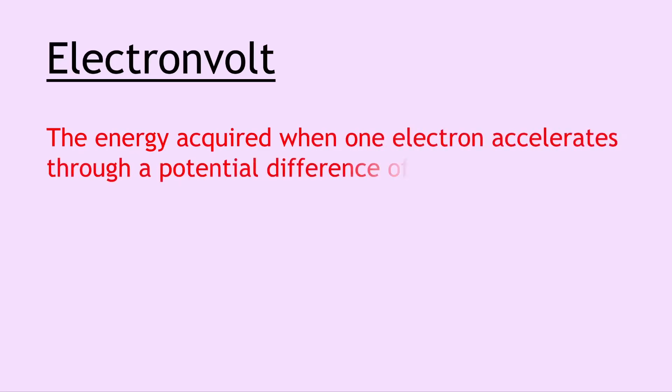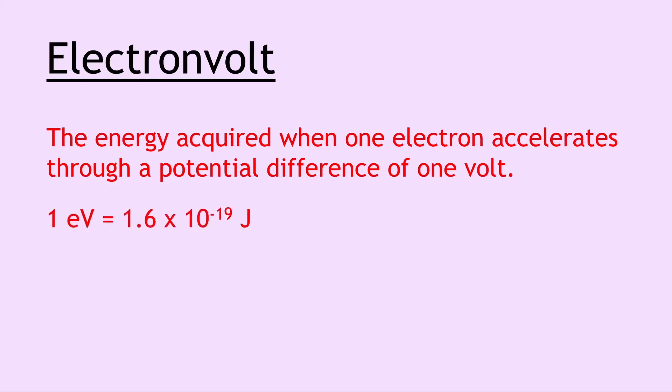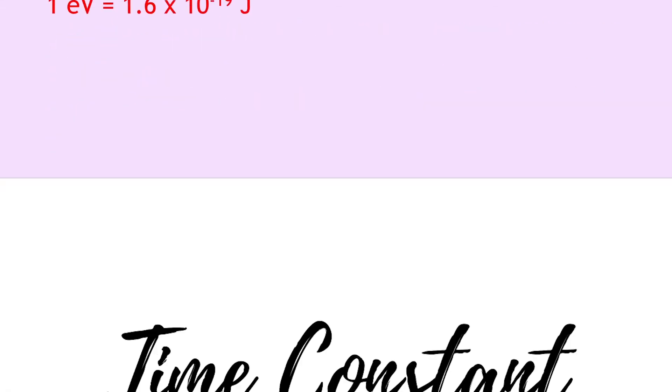Next we have the electron volt and this is the energy acquired when one electron accelerates through a potential difference of one volt. You should be able to convert numbers in joules into electron volts and vice versa. You can do this using the conversion: one electron volt equals 1.6 times 10 to the minus 19 joules.